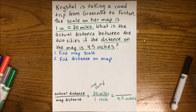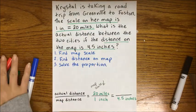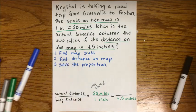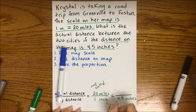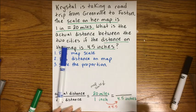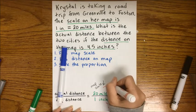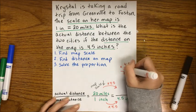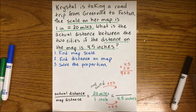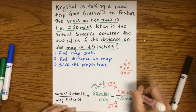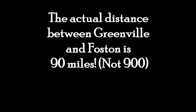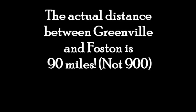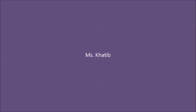The third step is we just solve our proportion. To get from 1 to 4.5 in our second ratio, we multiply by 4.5 and do the same thing to the top. So 4.5 times 20 — I made a mistake here, I forgot the decimal. It's actually not 900, it should be 90. The actual distance between Greenville and Faustin is 90 miles, not 900. Sorry for that mistake and thanks for watching.